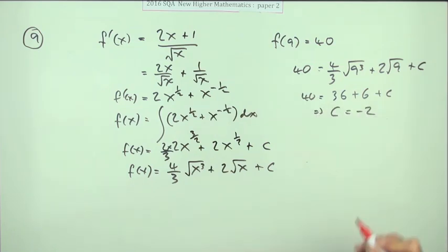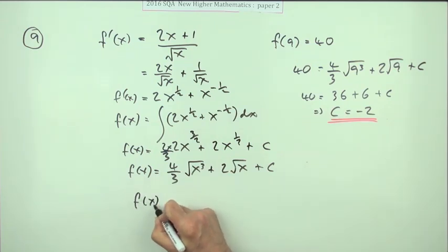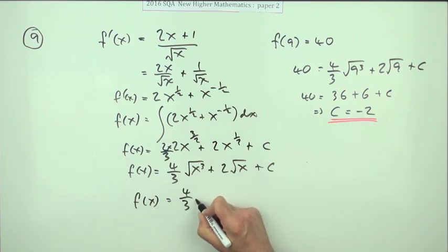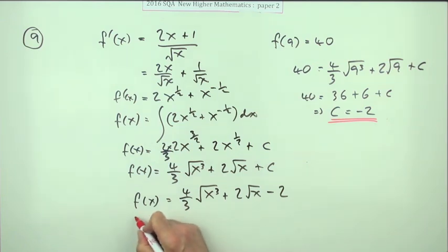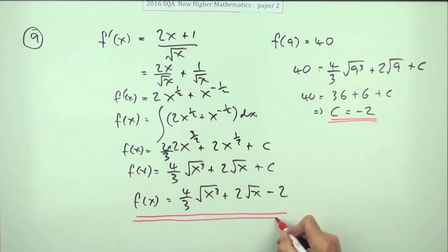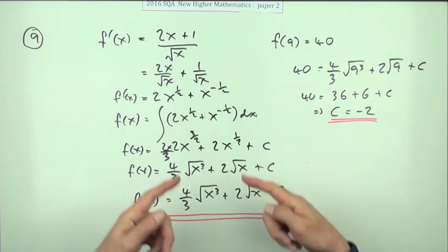Which means I can finish it off: f of x equals four upon three times the square root of x cubed plus two times the square root of x minus two. But you probably still get the marks if you just left it in index form as x to the three upon two and x to the half, just like putting it back the way I found it.